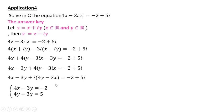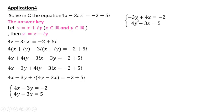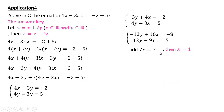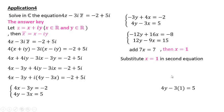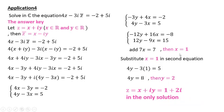We now have a system of two equations with two unknowns that can be solved easily. Rewrite: −3Y + 4X = −2. Multiply the first equation by 4 and the second by 3, then add — this is called the elimination method. Add to get 7X = 7, so X = 1. Substitute X into one of the equations to get 4Y − 3 = 5, so Y = 2. Then X = 1 and Y = 2, giving the final answer Z = 1 + 2i, the only solution of this equation.